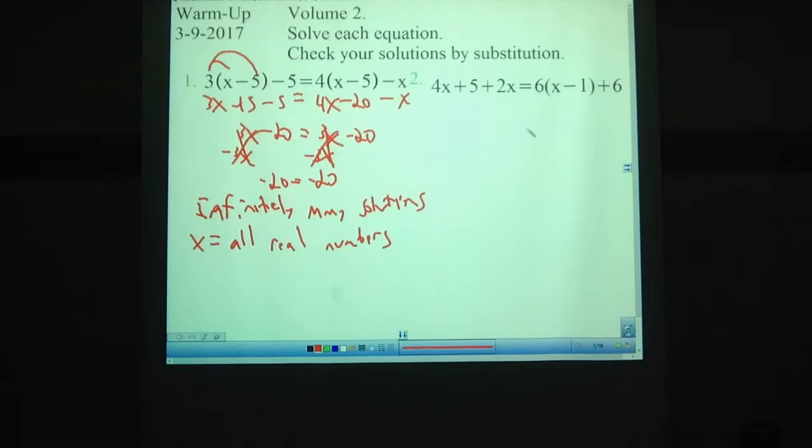Problem number two, 4x + 5 + 2x = 6(x - 1) + 6. 4x + 5 + 2x gives us 6x total, plus five. Over here, we have 6x - 6, we distribute that, plus six. A lot of sixes in this problem.